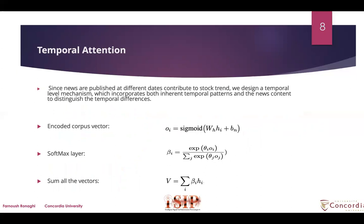First, we encode the corpus vector. Second, we feed it to a softmax layer. Finally, we sum all the vectors. The output of the temporal attention layer is then provided as input to fully connected fusion layers, where we have incorporated Gaussian noise layers to improve the robustness of the model.